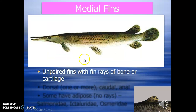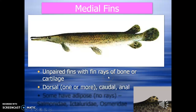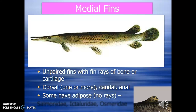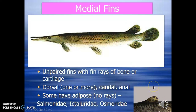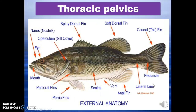Medial fins are unpaired fins with fin rays made of bone or cartilage. These include the dorsal fin (one or more), caudal fin, and anal fin. Some fishes have an adipose fin with no rays — here you can see the elongated finger-like projection-like structure. Examples include Salmonidae, Ictaluridae, and Osmeridae.